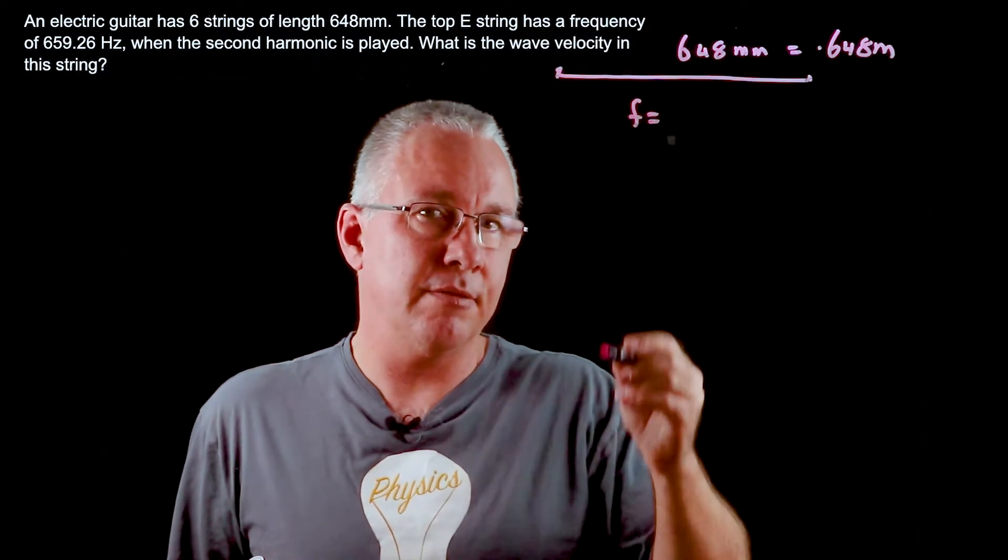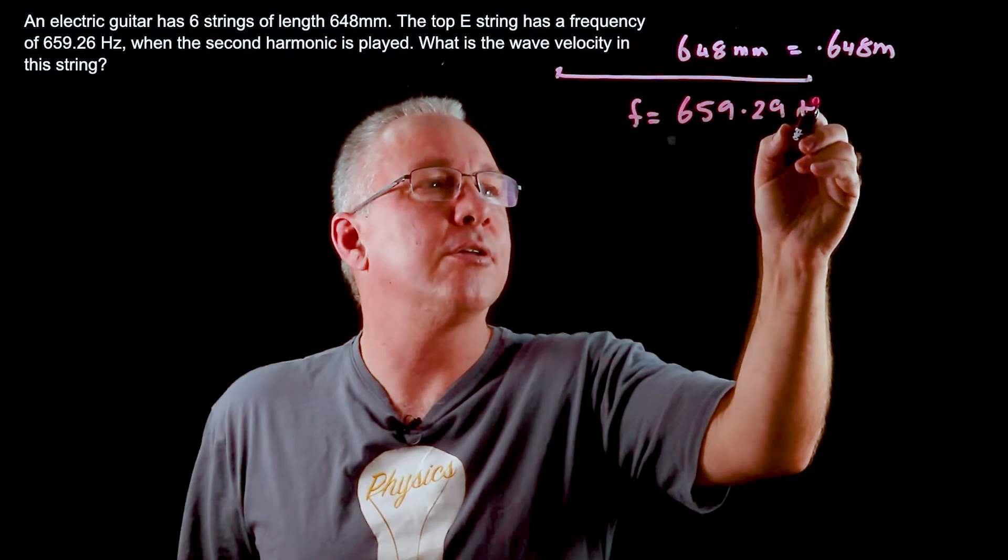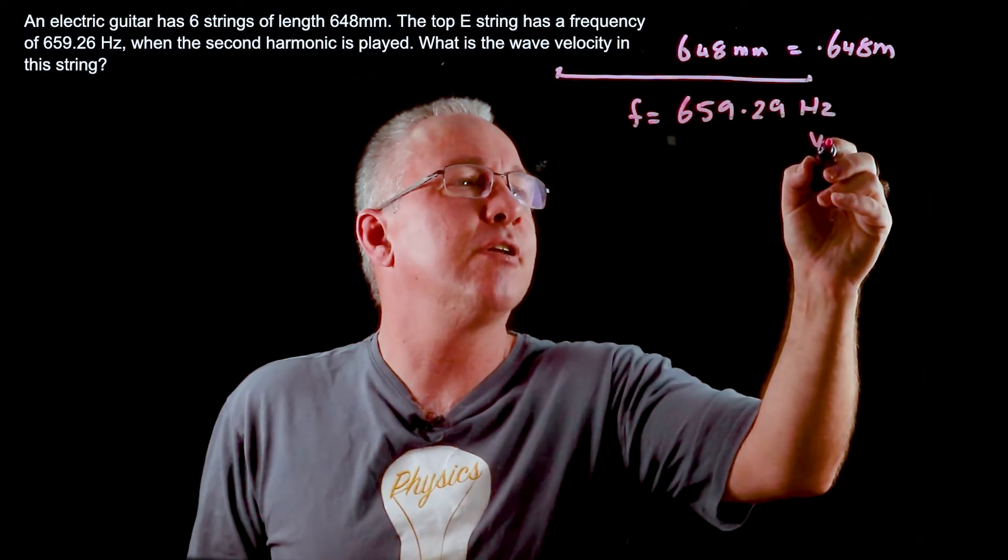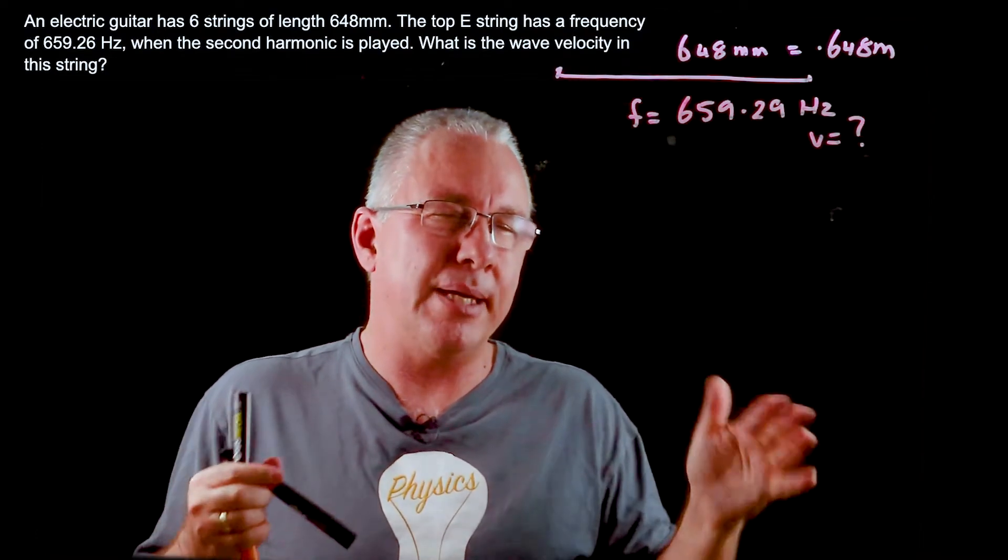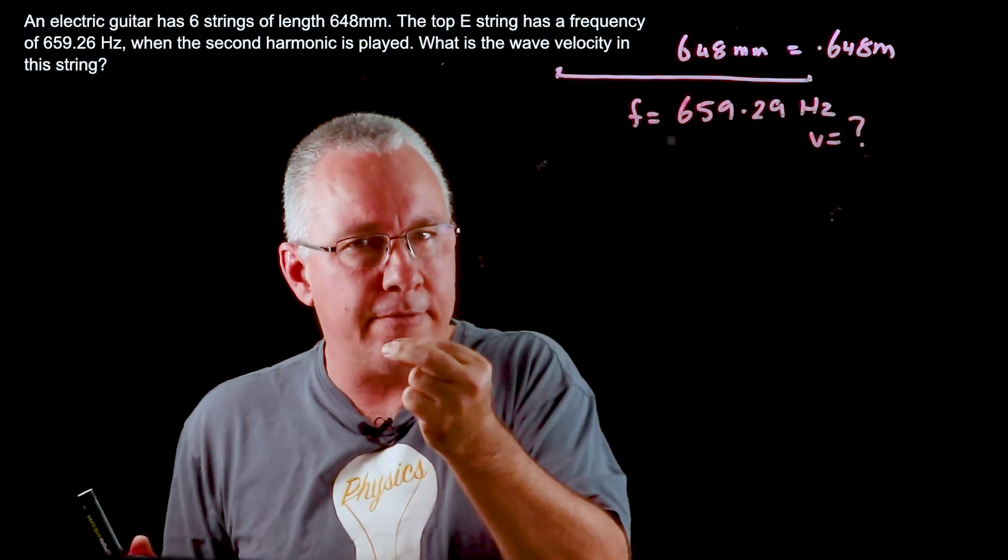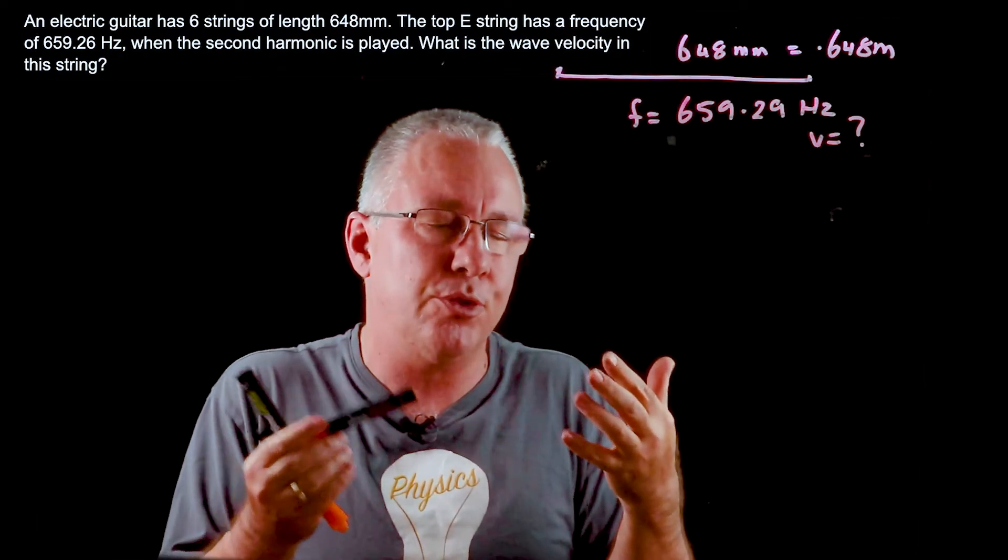The second thing we're told is the frequency, which is 659.29 hertz. In this case what we're trying to work out is the velocity of my standing wave. Remember it's standing because we have a wave going this way and a wave going this way, and they are interfering with each other to produce a standing wave.